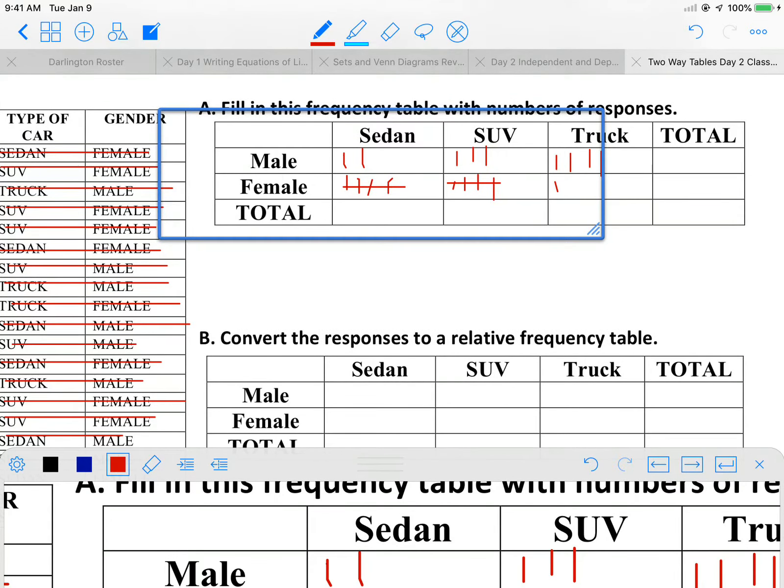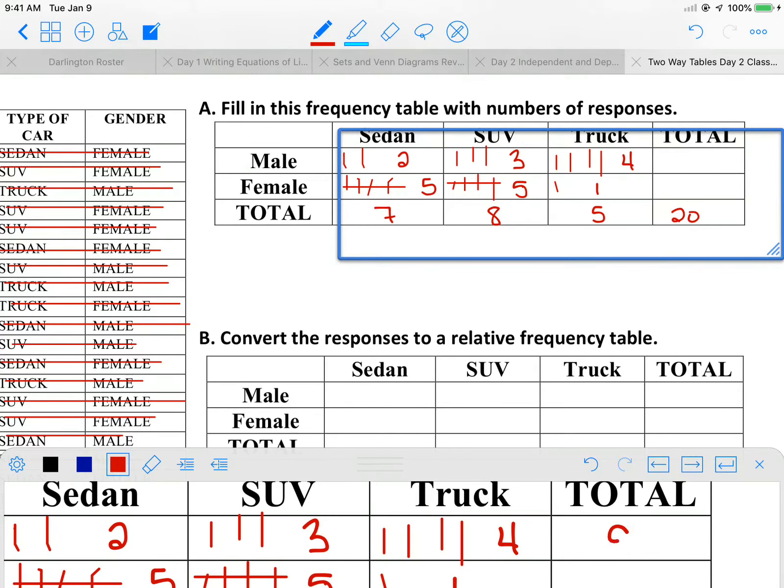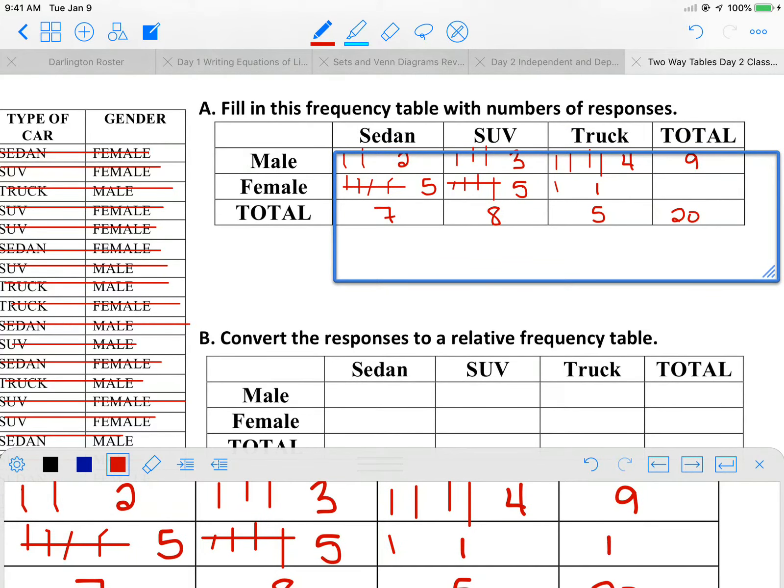We've got two, three, and four, so nine males and then 11 females.